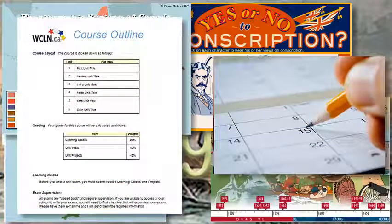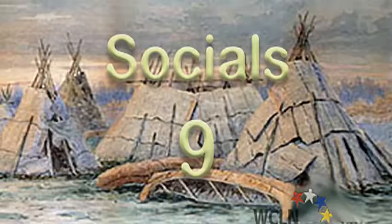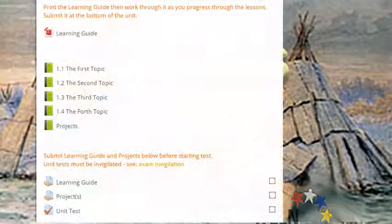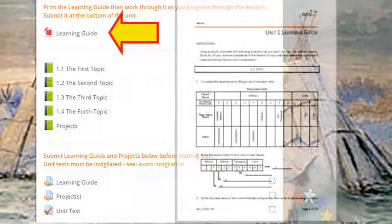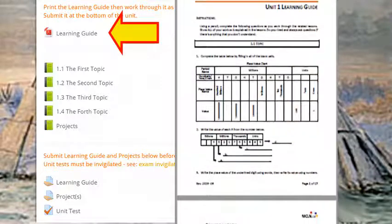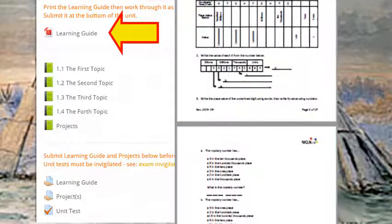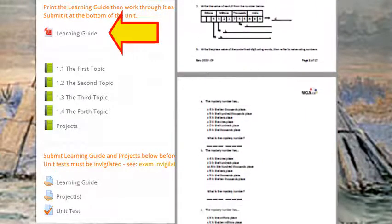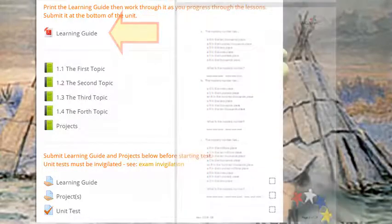Then, design a schedule that will help you meet your goals. Once ready to get started with the course content, head into the first unit. At the top of the unit, you'll find a learning guide. As you work through the lessons, you'll be using the learning guide to help you take notes and practice new skills. Keep your learning guide neat and well organized so it's ready for submission at the end of the unit.